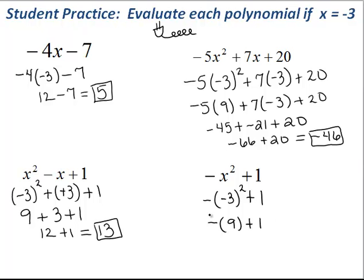And then we notice this negative sitting on the outside. So when you distribute that in, you get negative 9 plus 1. And we know negative 9 plus 1 is a negative 8. So our last example evaluates to negative 8.